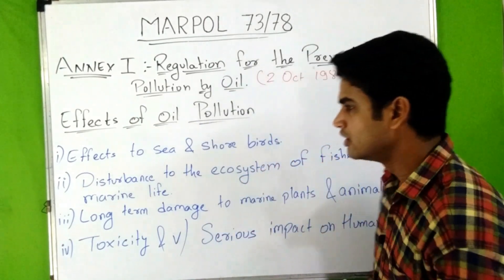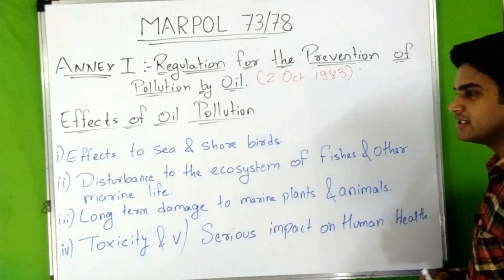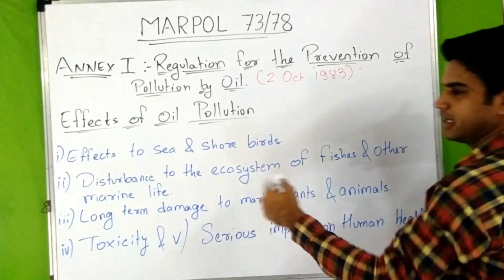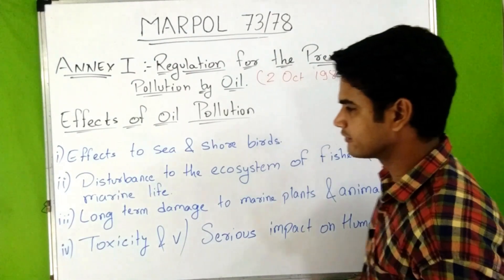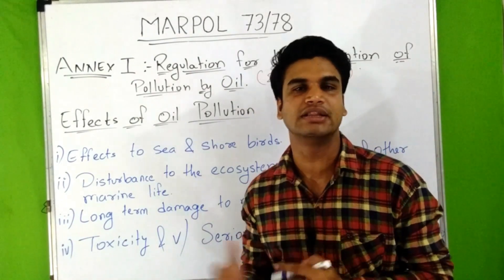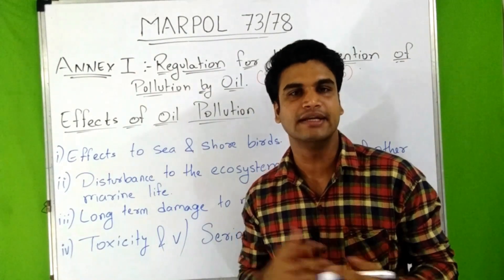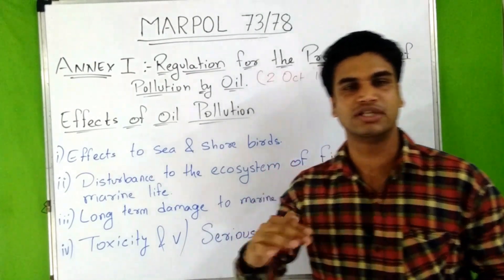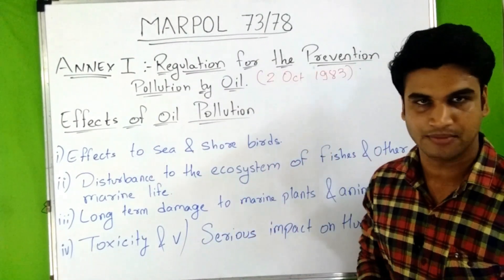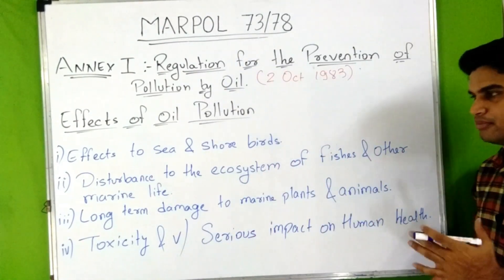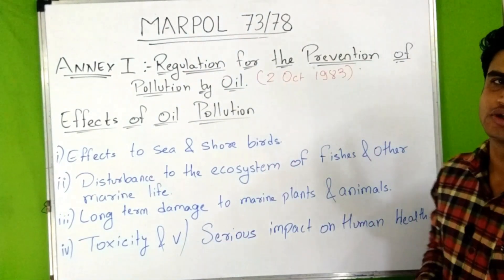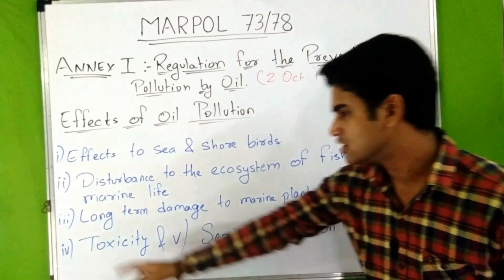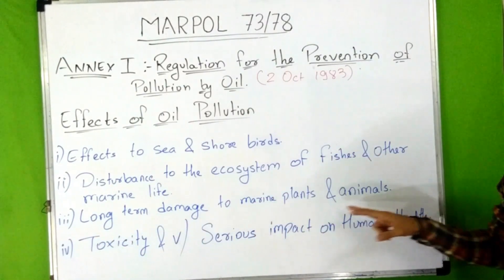The second effect is disturbance to the ecosystem of fish and other marine life. If a single element in an ecosystem is disturbed, the entire food chain is disrupted. The third effect is long-term damage to marine plants and animals — the Exxon Valdez oil spill's effects have been observed for decades.